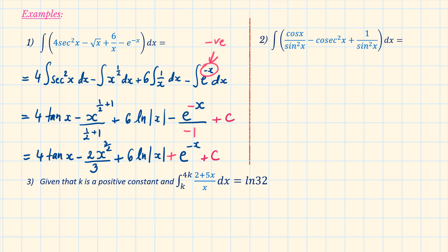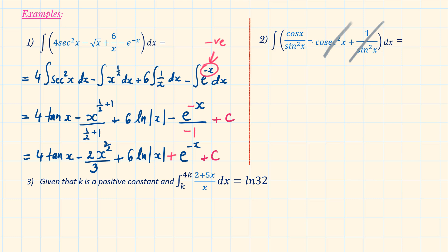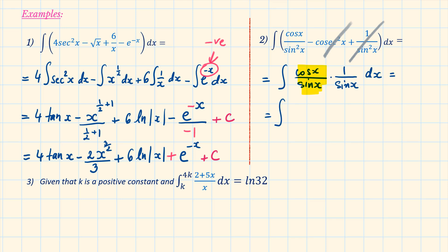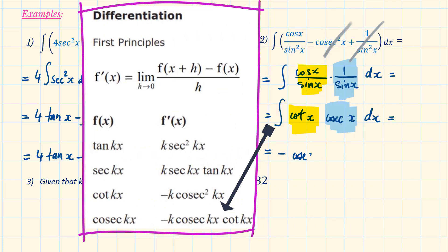Question 2: pause the video to solve it, then come back to check your answers. Welcome back. 1 over sin x is equal to cosec x; therefore, 1 over sin squared x is equal to cosec squared x. So the terms minus cosec squared x plus cosec squared x will cancel out, and we only have to integrate cos x over sin squared x. Cos x over sin squared x is not in the formula booklet, but we can rewrite it as cos x over sin x times 1 over sin x, which simplifies to cot x times cosec x. Using the formula booklet, this is equal to minus cosec x plus c.